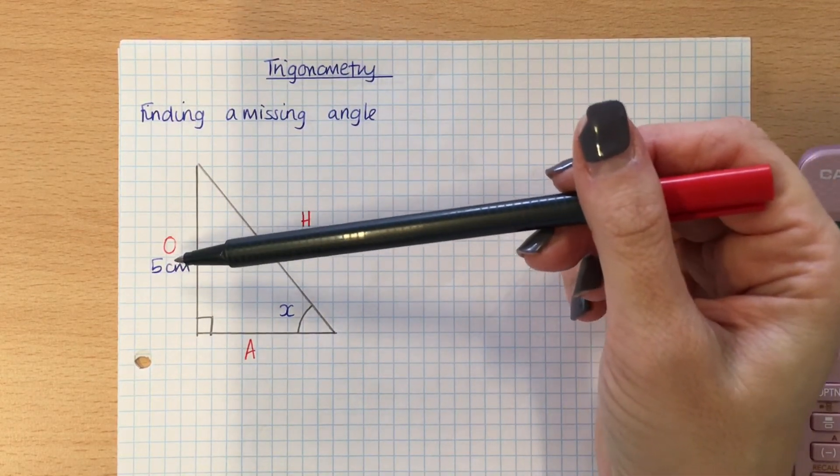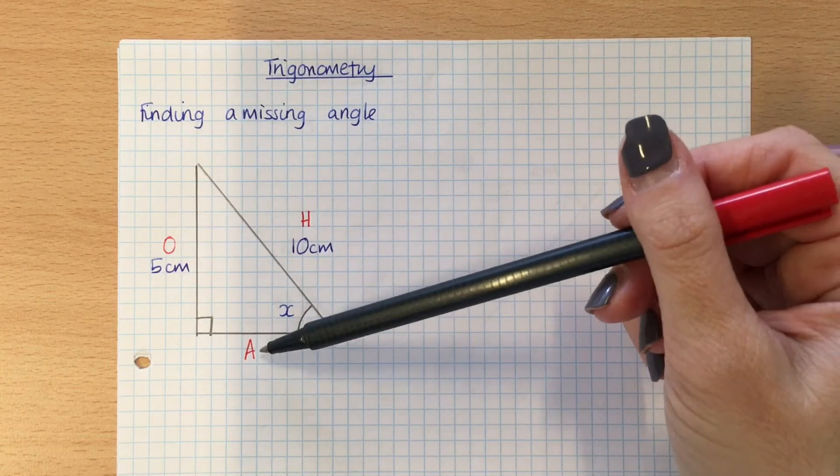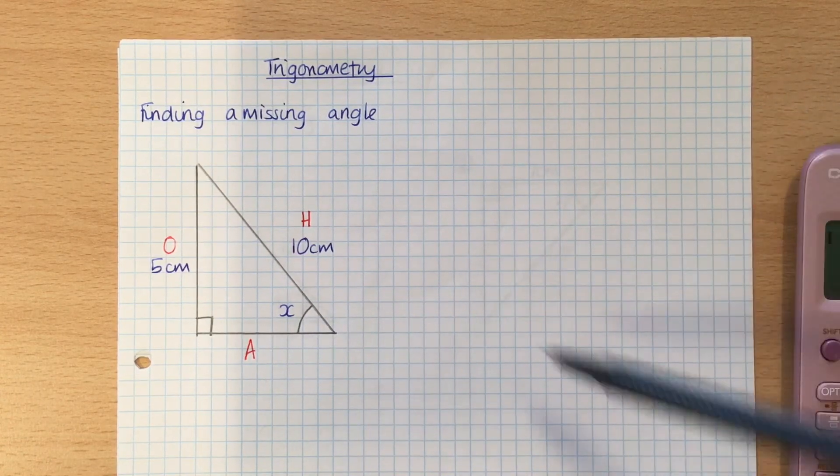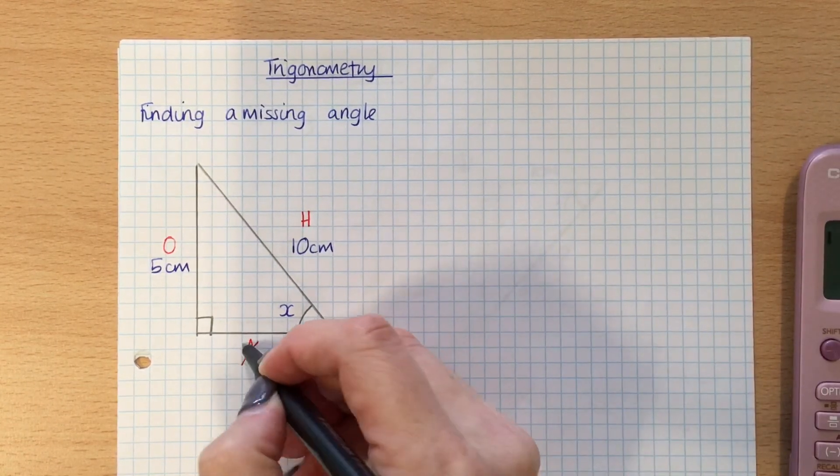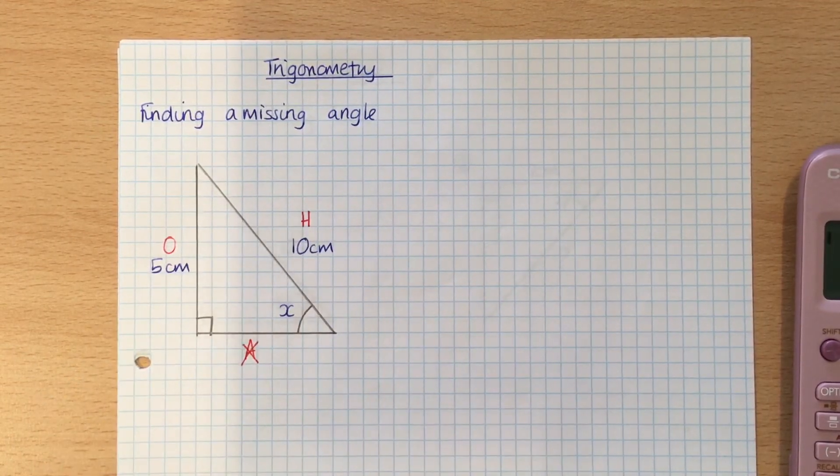O has got the 5 centimeters, that will be needed as well. A hasn't got anything, and it's not the side that we need to find out. So I cross out A, so I'm working with O and H.